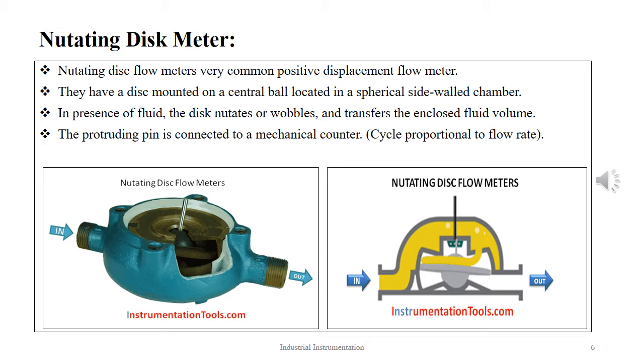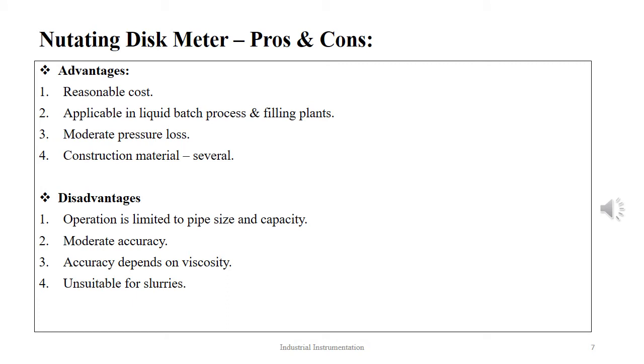As is true with all positive displacement flow meters, viscosity variations below a given threshold will affect the measuring accuracies. The advantages of the nutating disc meter are reasonable cost, applicability in liquid batch processes and filling plants, moderate pressure loss, and wide construction material range.